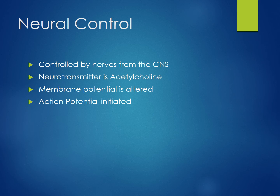Skeletal muscle contraction is controlled by nerves that originate from the central nervous system. A special signaling chemical called a neurotransmitter is utilized to communicate from the nerves to the muscle fibers. The specific neurotransmitter used is acetylcholine. It changes the membrane potential of the muscle fiber's sarcolemma, which leads to an action potential initiating in the sarcolemma. The action potential will then continue from the sarcolemma through the T-tubules, causing the sarcoplasmic reticulum to release calcium ions, which initiate a change in the troponin-tropomyosin complex and enable the sarcomere to contract.